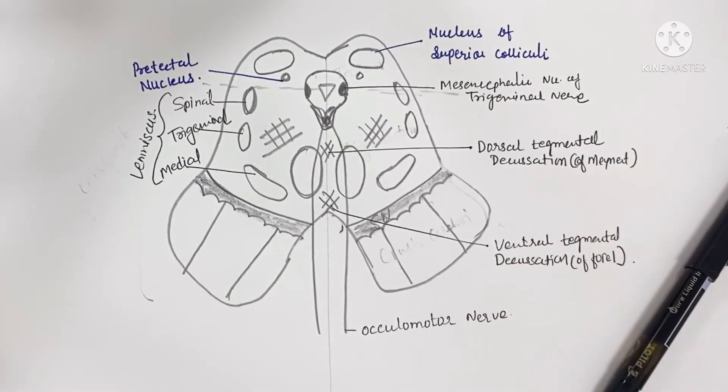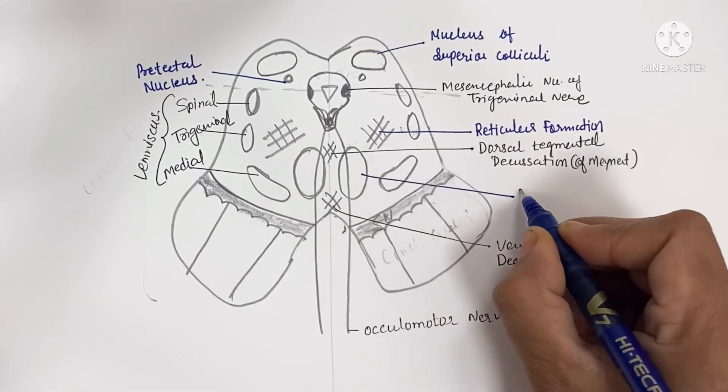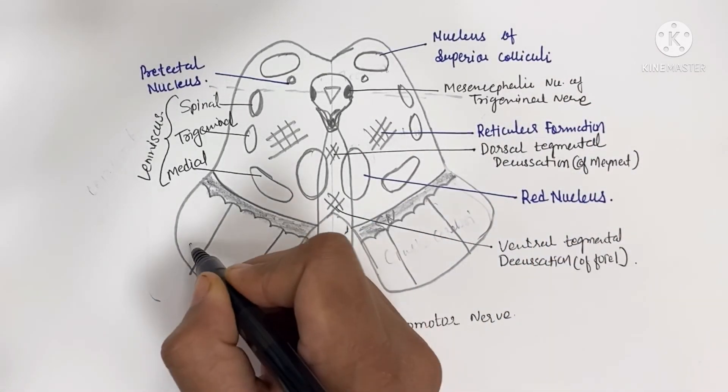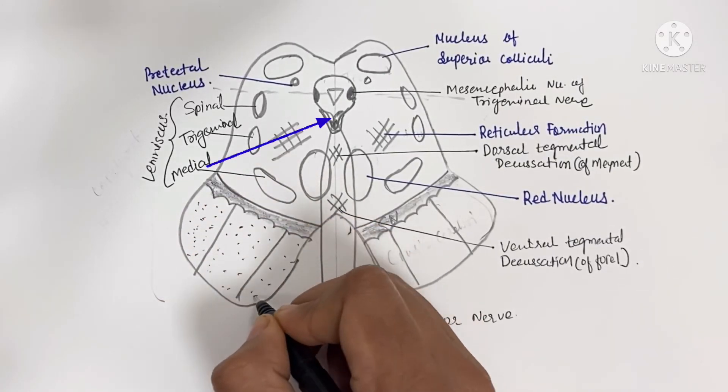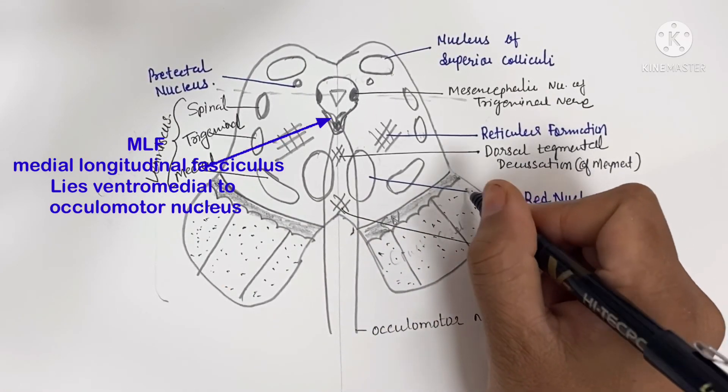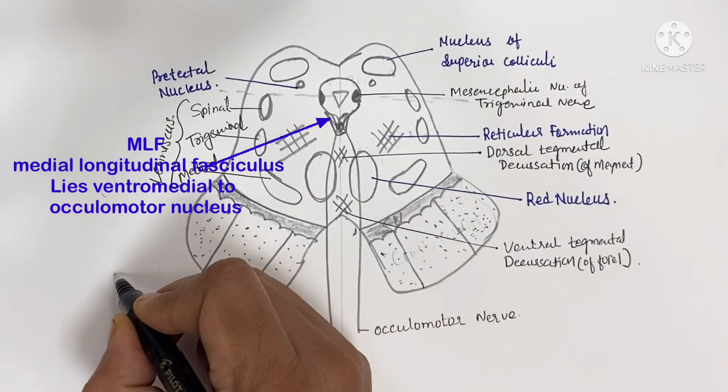Reticular formation occupies the whole brainstem except for nuclei and tracts. It is an ill-defined mass of nerve cells and nerve fibers. It receives data from most of the sensory systems and contains the cardiac and respiratory centers which control heart rate, blood pressure, and respiration.